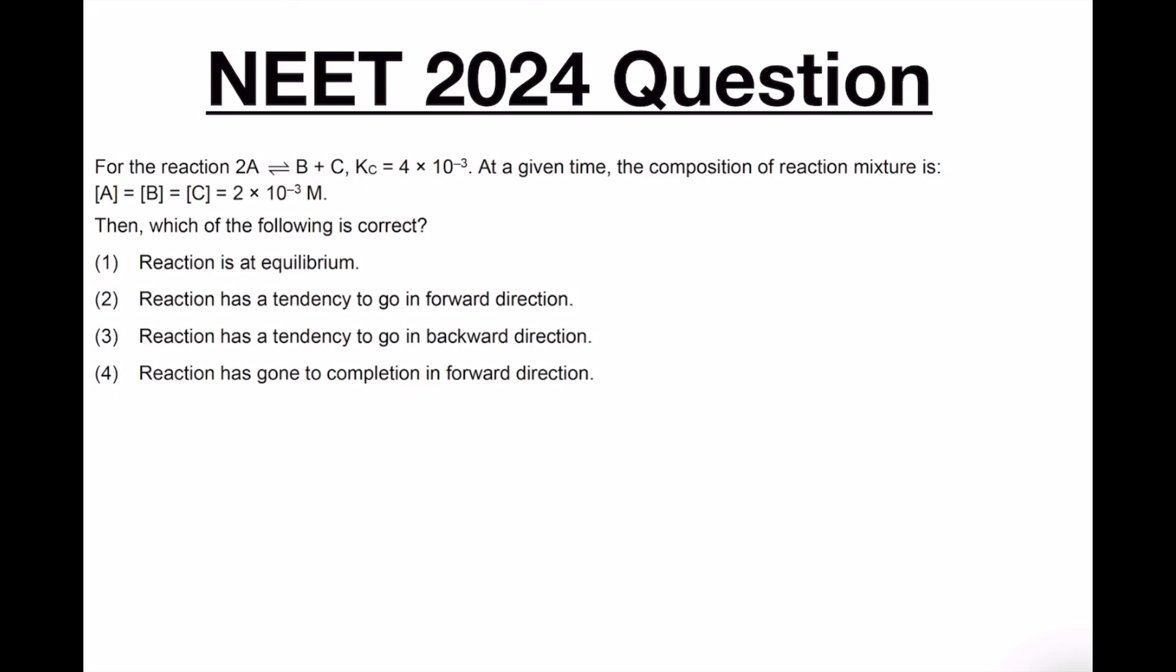Here is a question related to chemical equilibrium. For the reaction 2A becoming products B plus C, the value of equilibrium constant is given, and at a particular time the composition of reaction mixture is also given. Then they were asking which of the statement is correct.